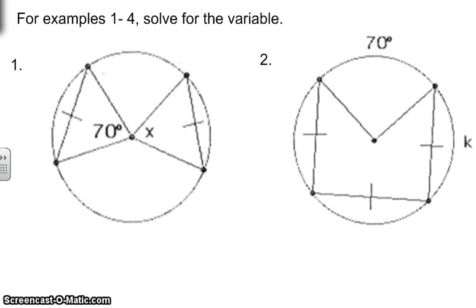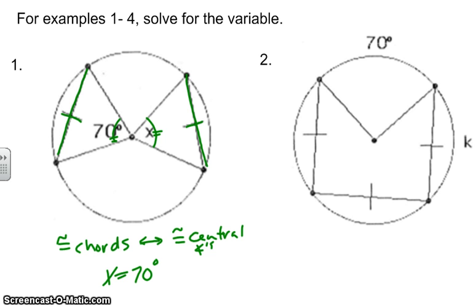Example one. How do we find out what X is? Based off of the last theorem, we know that congruent chords are going to create congruent central angles. So keep that in mind when you look at the congruent chords here. And so if those are congruent, that means this one and this angle are going to be exactly the same. Therefore, X is going to equal 70 degrees.